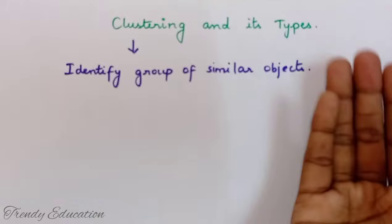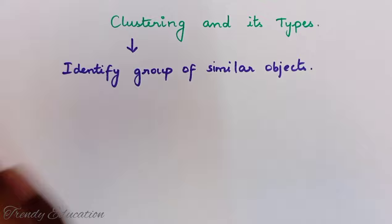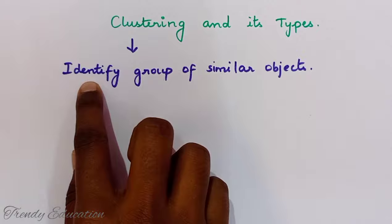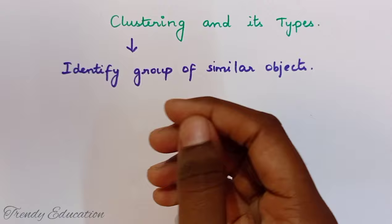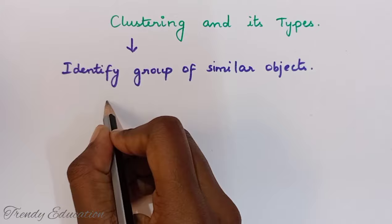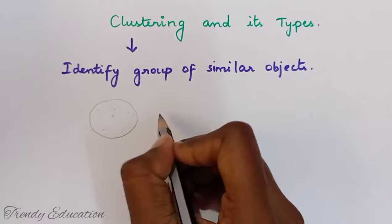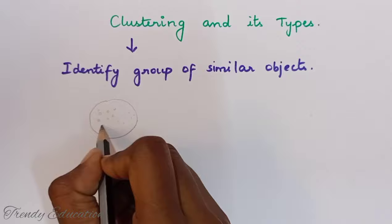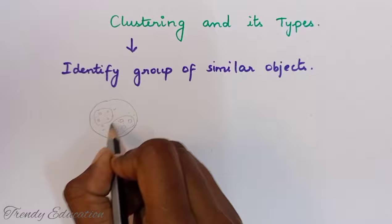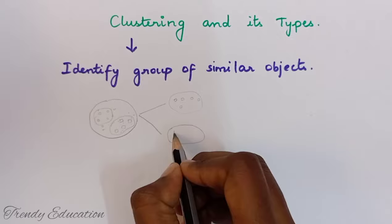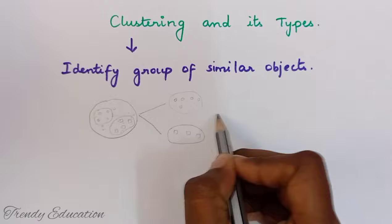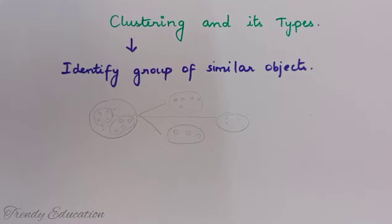So what is clustering? It's a very easy topic in data mining. In clustering, we are going to identify groups of similar objects — objects which are similar are identified as a single group. Here there is a group of data objects, and what I'm going to do is identify the similar objects and cluster them as a group. These circles are a single group, these squares are a single group — this is what clustering.